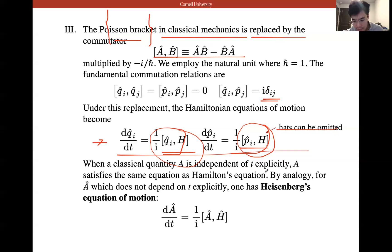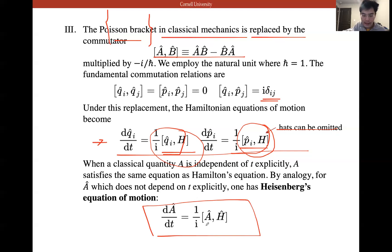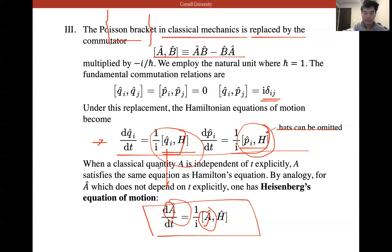When the classical quantity A is independent of T explicitly, A satisfies the same equation as Hamilton's equation. By analogy, for Â which does not depend on T explicitly, one has Heisenberg's equation of motion. A here can be a general observable — it doesn't need to be Q or P.